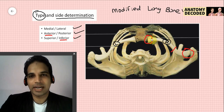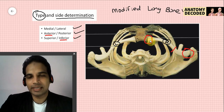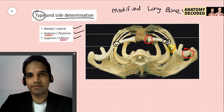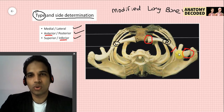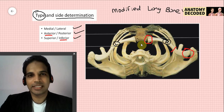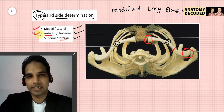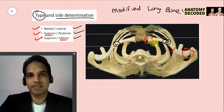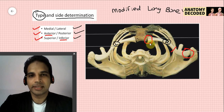So this is the clavicle of the right side because the medial end is quadrangular, the medial two-thirds is convex on the anterior aspect, and the conoid tubercle is on the inferior aspect. When stating the justification for the side, we should cover all three dimensions, and once we have justified these three dimensions we can specifically say that this is the bone of the particular side.